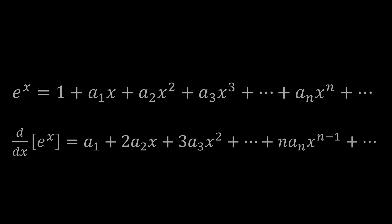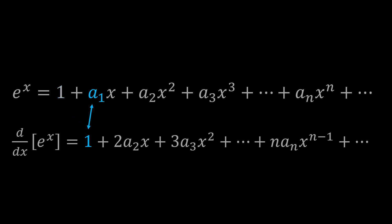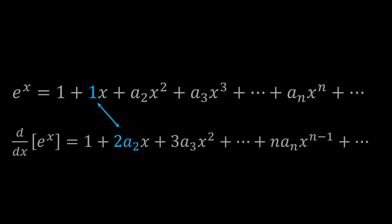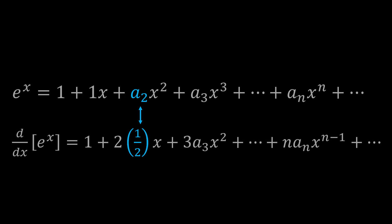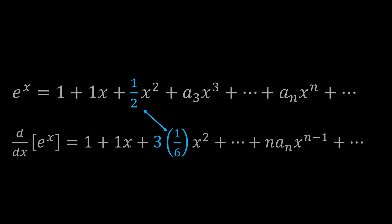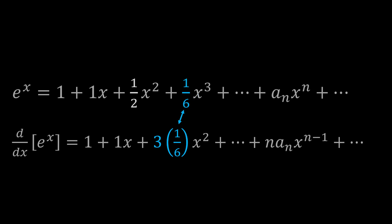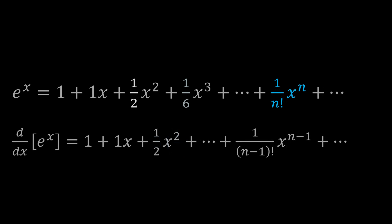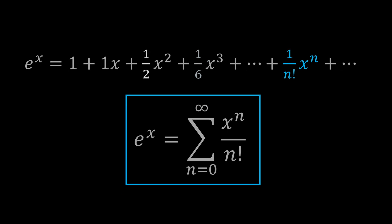Now this part feels like magic. In order for E to the x to equal its own derivative for all values of x, these two polynomials have to be equal in each order. The constant term in E to the x is 1, and the constant term in the derivative is a1 — so a1 equals 1. Plugging that back in, we see 1 equals 2·a2, so a2 equals 1/2. Then 1/2 equals 3·a3, so a3 equals 1/6. Then 1/6 equals 4·a4, and the whole thing zips out to infinity. The pattern gives us that the nth order coefficient an equals 1 over n factorial.